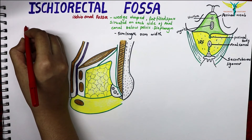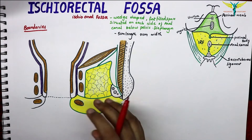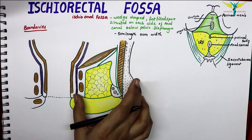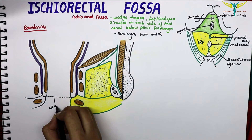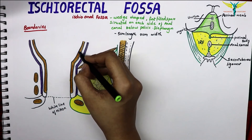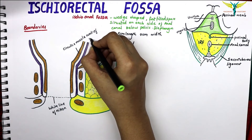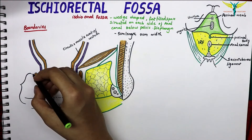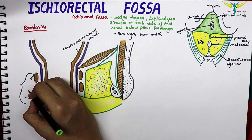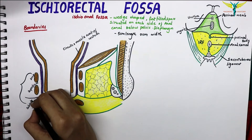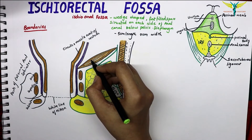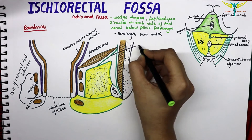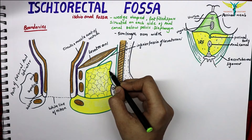Now let's talk about the boundaries. To know about the boundaries, we should know the labeling of this diagram. This is the anal canal and this is the ischiorectal fossa. This is the white line of Hilton and this is the circular muscle coat of the rectum. These are the muscles included in the external anal sphincter: the deep part, superficial, and subcutaneous. This muscle is the levator ani, and this is the inferior fascia of the levator ani.